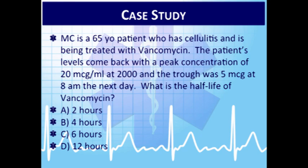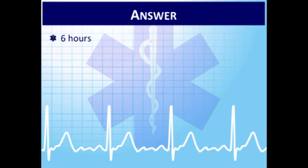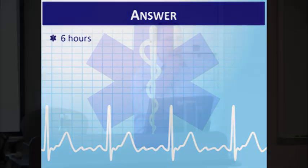Third case: a 65-year-old patient with cellulitis being treated with Vancomycin. Peak concentration came back at 20 mcg/mL at 8 p.m. Trough the next day at 8 a.m. was 5 mcg/mL. What is the half-life of Vancomycin? The half-life is the time to drop to half the concentration. At 8 p.m., concentration was 20. Six hours later it would be 10. Six hours after that — at 8 a.m. — it would be 5. That's 12 hours total, two half-lives. Therefore, the half-life is 6 hours.